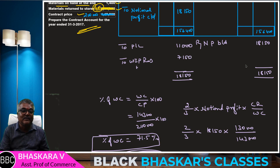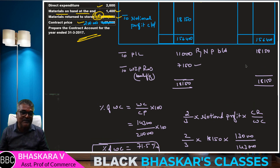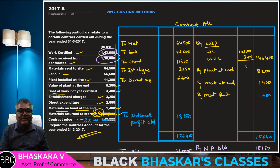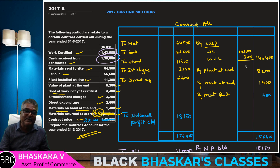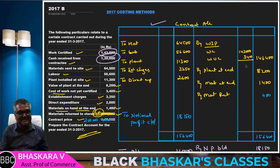The balancing figure of 7,150 is transferred to work in progress reserve, students. This was the second problem of the 2017 question paper, Section B. If you found this helpful, please like, comment, and share with your friends. See you in the next session for another Section B problem. Bye-bye, friends.